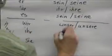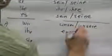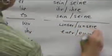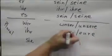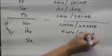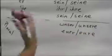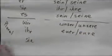You all's. You all's is euer or eure. When we add an ending to euer, we drop out this e here. Do you see that? No e in there, because otherwise it would be too hard to pronounce it.